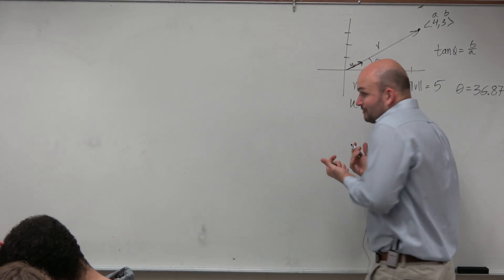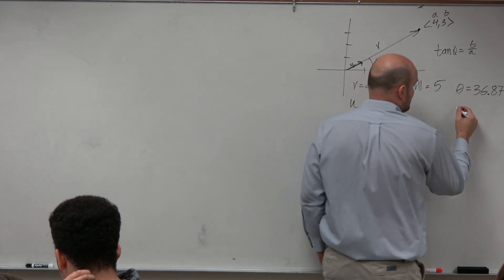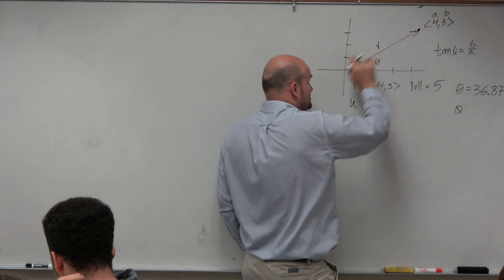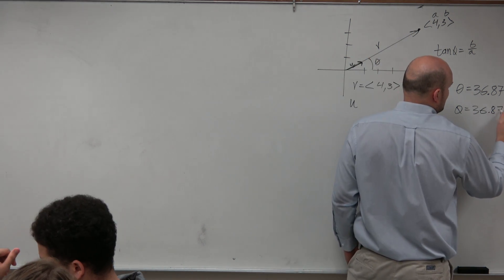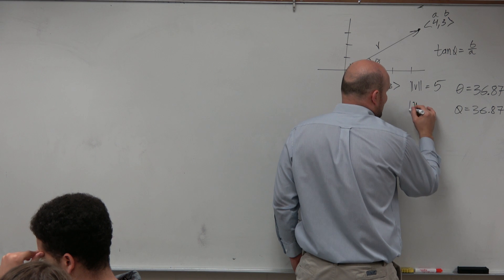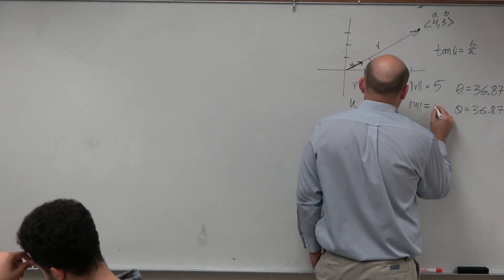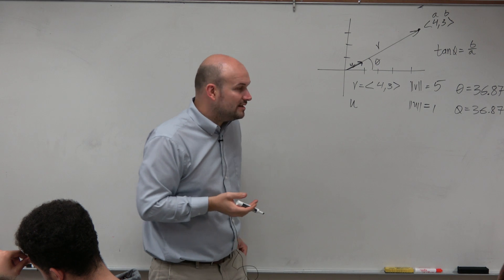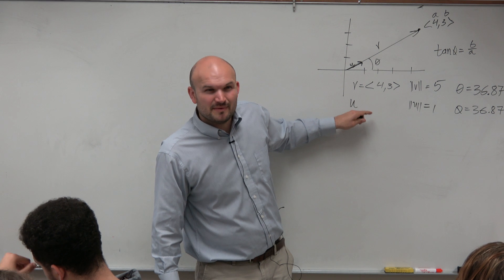So if you guys remember from the unit vector, the unit vector had the same direction, like they both started 0, 0 going out, had the same angle. But does anybody remember what the magnitude of the unit vector was? 1, right? The magnitude was 1. And does anybody remember how we go from the vector towards the unit vector?